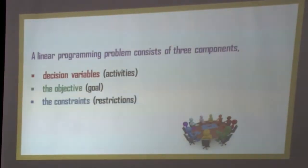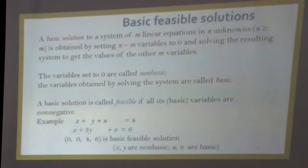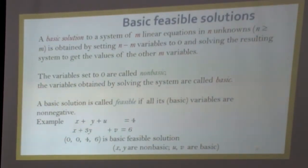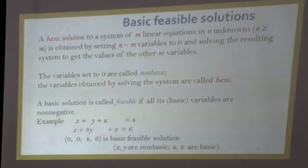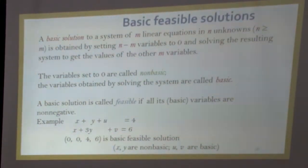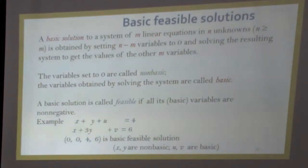A linear programming problem consists of three components: decision variables, the objective, and the constraints. A basic solution to a system of M linear equations in N unknowns is obtained by setting N minus M variables to 0 and solving the resulting system to get the values of the other M variables. The variables obtained by solving the system are called basic variables; the variables set to 0 are called non-basic variables. If all the basic variables are non-negative, then the solution is called a basic feasible solution.